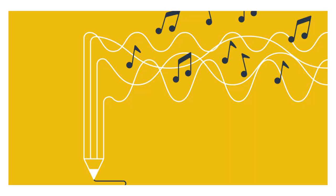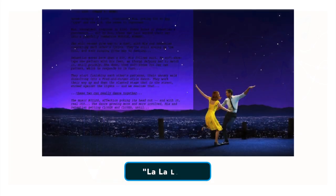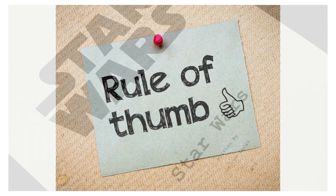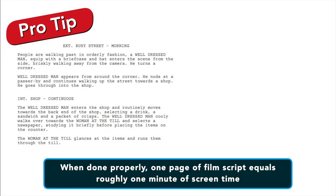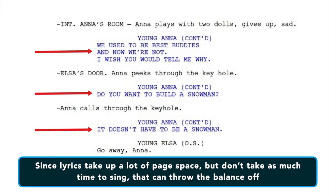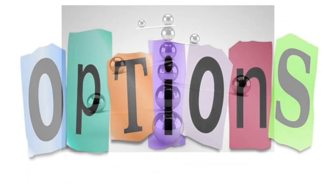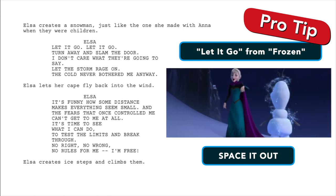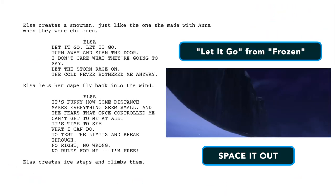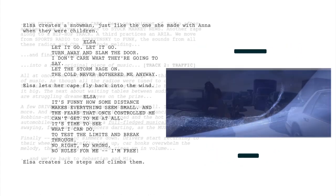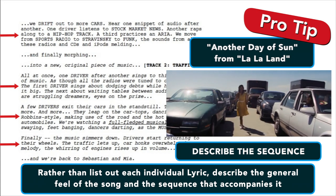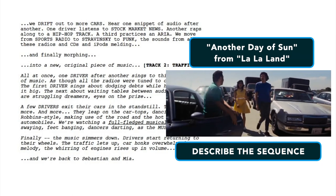Number ten are lyrics. Lyrics are tricky when it comes to screenplay formatting, particularly when they have to be matched to action on screen. No screenwriting software has a lyrics element. An important rule of thumb is that one page of film script equals roughly one minute of screen time — emphasis on roughly. Since lyrics take up a lot of page space but don't take as much time to sing, that can throw the balance off. You have two options: first, space it out by spreading lyrics on a page with shots and action directions to design a little choreography and establish rhythm and pacing. The other option is to describe the sequence — rather than list each individual lyric, describe the general feel of the song and the sequence that accompanies it, like the musical sequence of La La Land.